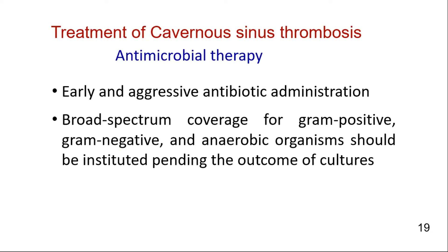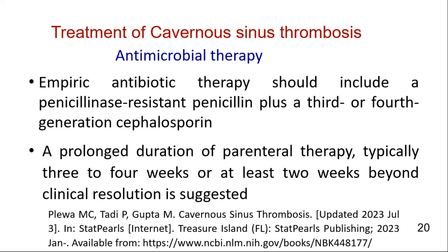The mainstay of therapy for cavernous sinus thrombosis is early and aggressive antibiotic administration. Although Staphylococcus aureus is the usual cause, broad-spectrum antibiotic coverage for gram-positive and gram-negative organisms should be started without waiting for culture results. If anaerobic infection is suspected, anaerobic coverage should also be added. Empiric antibiotic therapy should include a penicillinase-resistant penicillin plus a third or fourth generation cephalosporin. IV antibiotics are recommended for a minimum of three to four weeks.